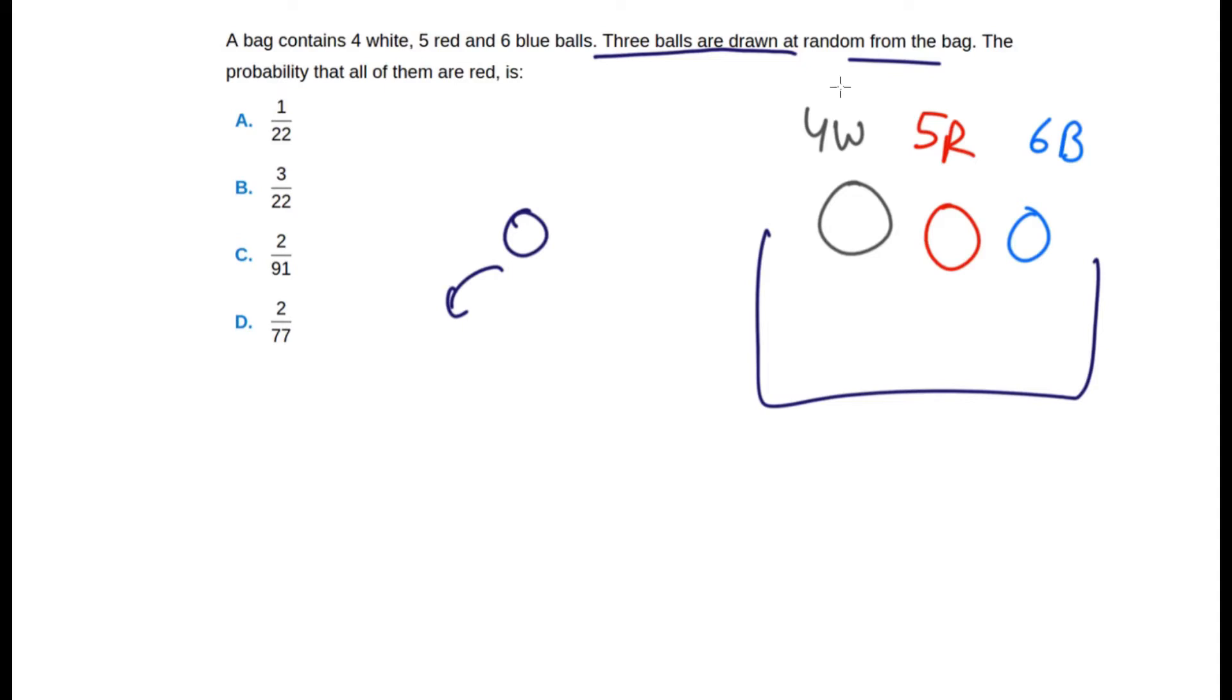The probability of getting all of them red. So if you want all the balls we get to be red, then what we have to do is simple: we just have to assume that there will be no white or blue ball in our selection.